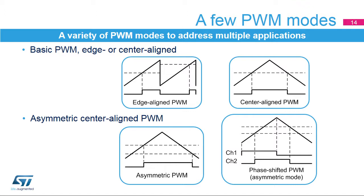This slide presents some of the PWM modes. The standard edge-aligned PWM mode is programmed with the auto-reload register defining the period and the compare register defining the duty cycle, with the counter in up-only or down-only counting mode. A single timer can generate up to four PWM signals with independent duty cycles and identical frequency. When multiple PWM waveforms are generated by the same timer, all falling edges occur at the same time, hence the term edge-aligned. Center-aligned PWMs use up-down counting mode, which spreads switching noise when multiple PWMs are generated, and is a key feature for three-phase PWM generation allowing you to double the frequency of the current ripple for a given switching frequency.